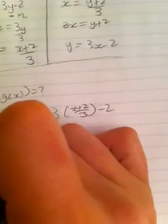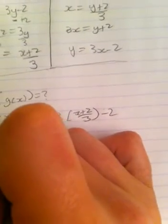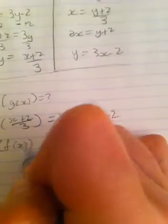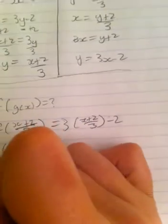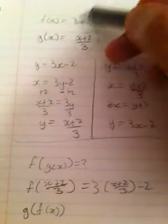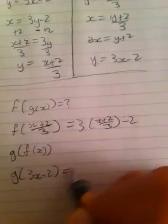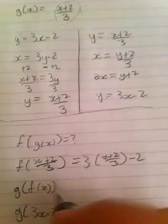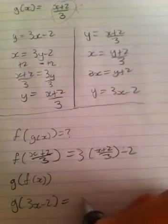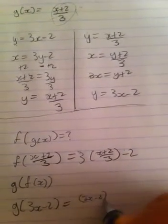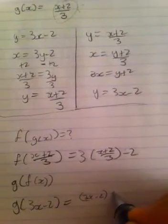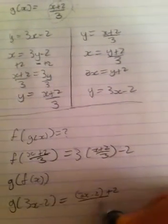Now we're going to do the same for g of x, we're going to find g of f of x, and this should equal, g of f of x is 3x minus 2, so it's going to be g of 3x minus 2. This is going to equal, I'm going to plug 3x minus 2 in here so that we have 3x minus 2 plus 2 over 3.